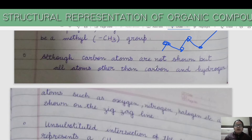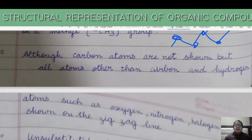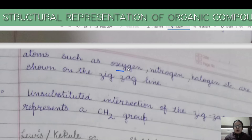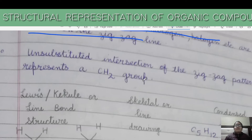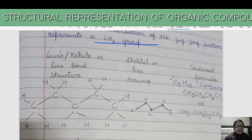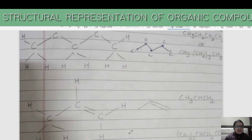Although carbon atoms are not explicitly shown, all atoms other than carbon and hydrogen — such as oxygen, nitrogen, halogens, etc. — are shown on the zigzag line. Carbon and hydrogen are not labeled in the zigzag pattern, but any other element present will be shown. An unsubstituted intersection of the zigzag pattern represents a CH2 group.